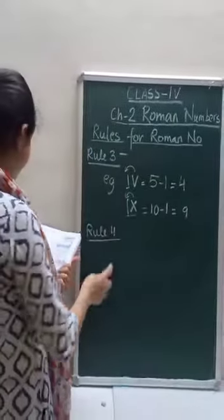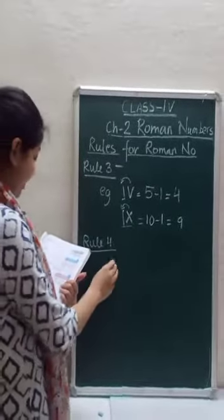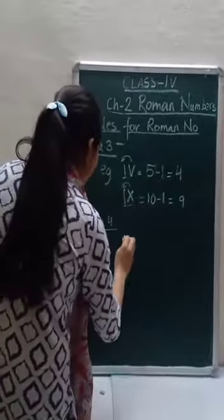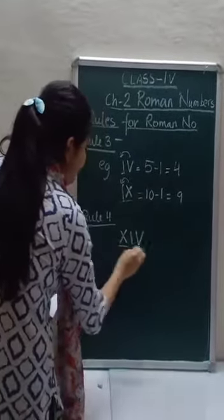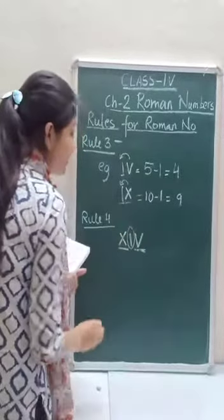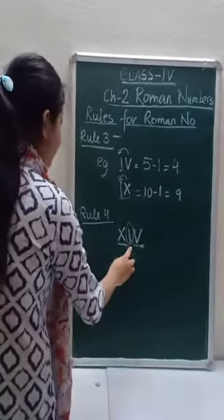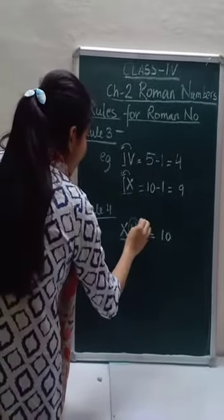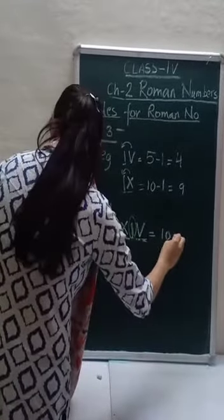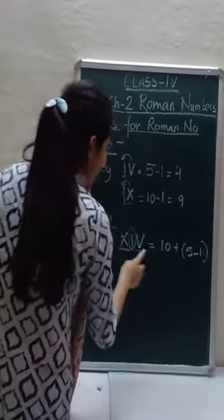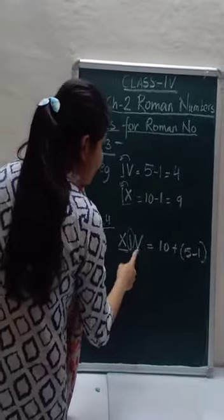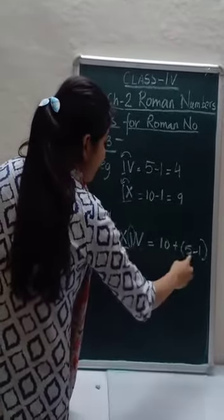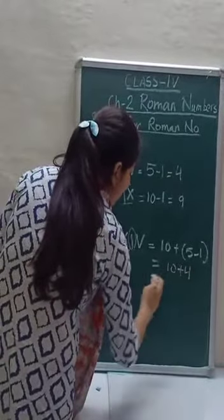Rule number 4: when a Roman numeral of smaller value is placed between numerals of greater value, it is subtracted from the numeral on its right. Suppose we have a number where both outer symbols are of higher value but the middle one is of lower value. We subtract the middle one from the right higher symbol. For example, XIV — X is 10, IV is 4, so the number is 10 plus 4 equals 14.